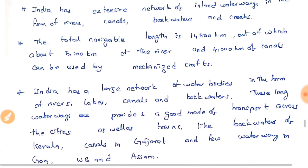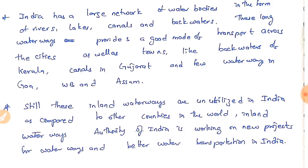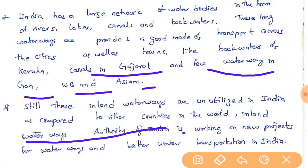India has a large network of water bodies in the form of rivers, lakes, canals, and backwaters. These provide a good mode of transport across cities and towns — like the backwaters of Kerala, canals in Gujarat, and waterways in Goa, West Bengal, and Assam. However, these inland waterways are still underutilized in India compared to other countries. European nations like Scandinavian countries and Poland utilize waterways efficiently, but India falls behind.